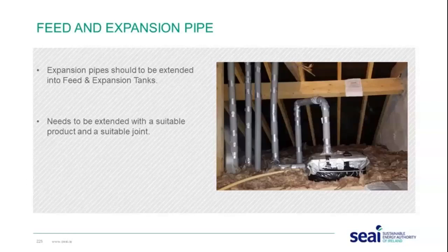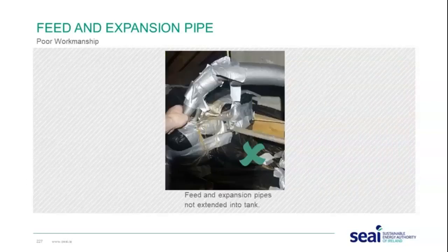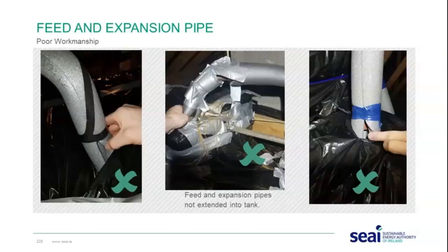Feed and expansion pipes should be extended with a suitable product and a suitable joint such as copper, and the pipe should be terminated below the lid of the tank but not below the water line. A poor workmanship example shows feed and expansion pipes not extended into the tank — in one inspected job, water was overflowing down onto the insulation at ceiling level and leaking through to the plasterboard ceiling below. Proper extension into the tank could prevent that callback.